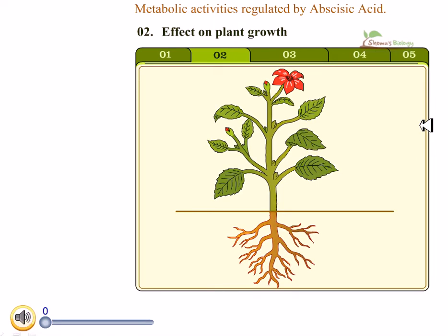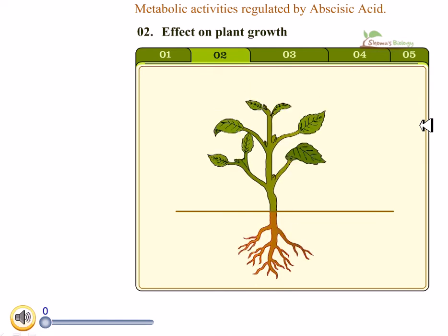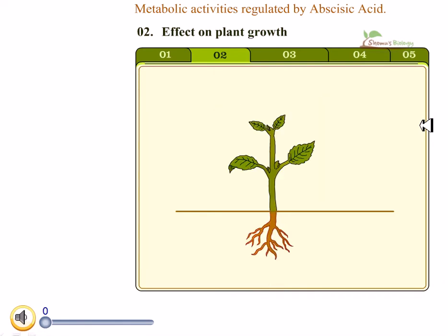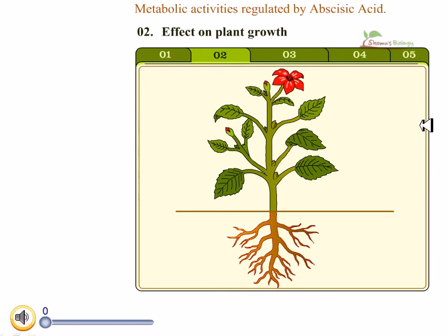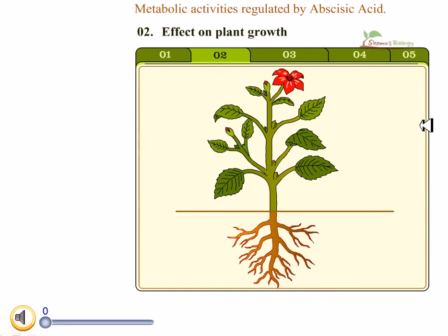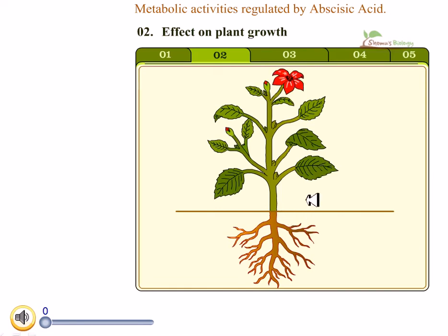Effect on plant growth: there are different opinions on the effect of abscisic acid on plant growth. In general, it is accepted that plant growth is inhibited by abscisic acid. It also affects the geotropism of the root — geotropism means the root grows downward with gravity, going against the air and into the soil. This geotropism is maintained by abscisic acid.